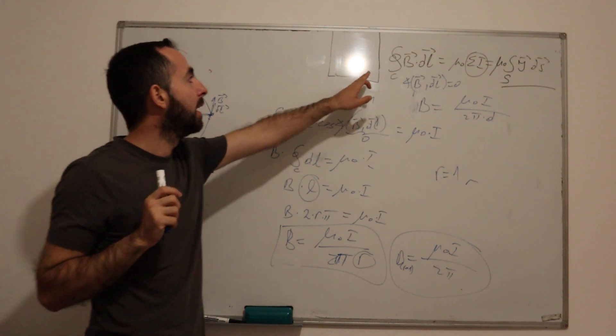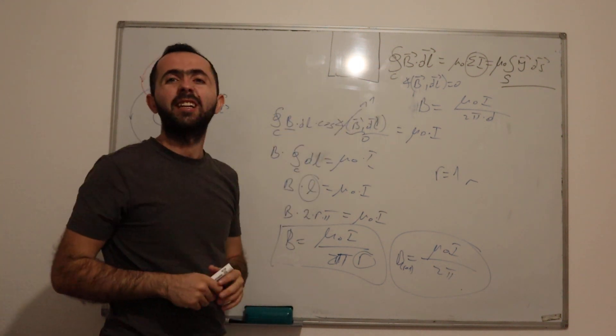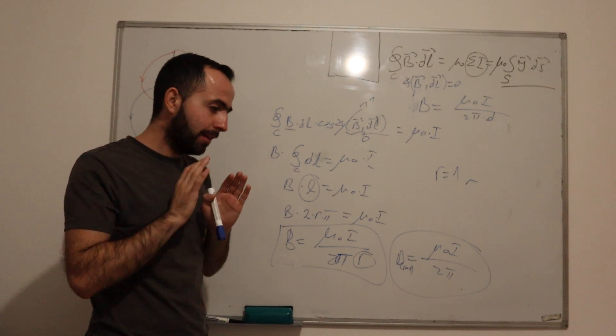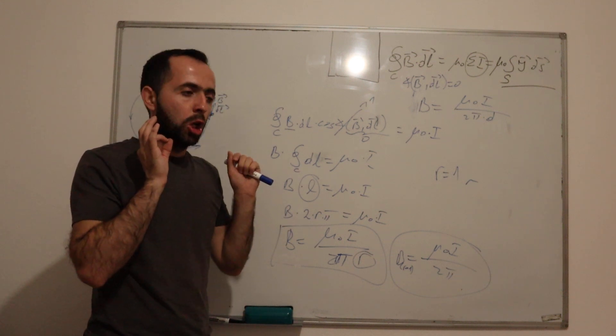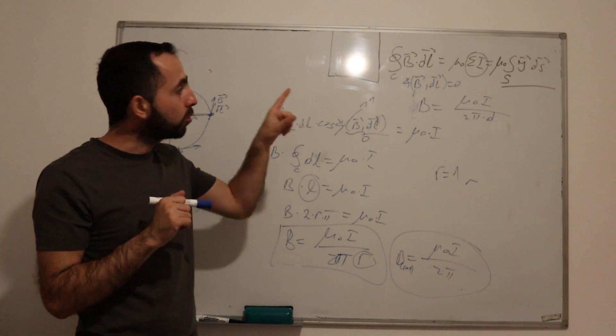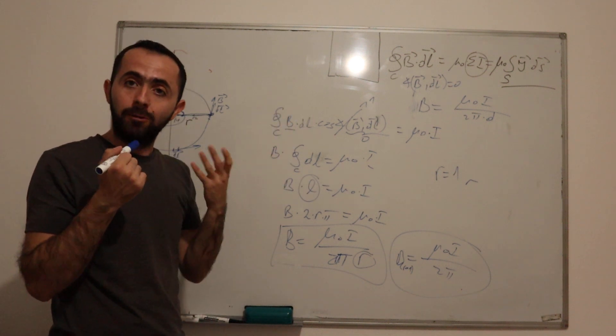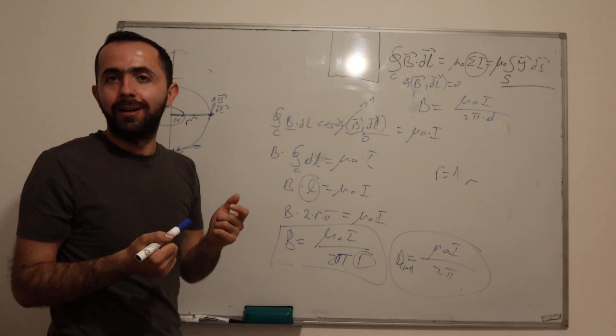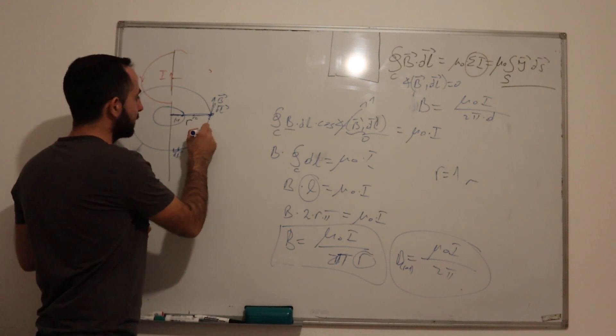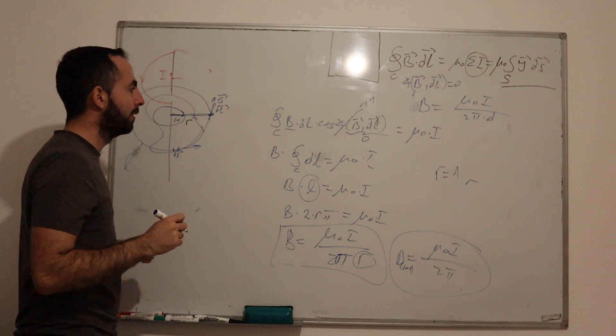Ampere's law says, because this is an integral of a closed contour, it's not important what type of closed contour you use or choose. But if you choose some different contour, then what will you get?